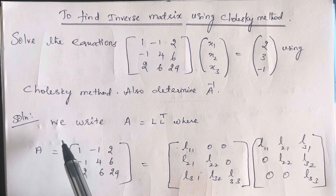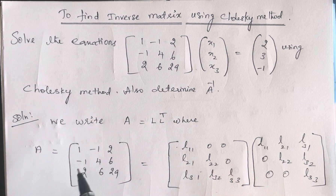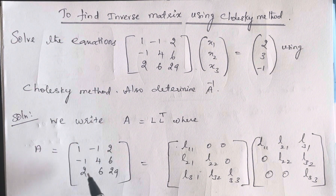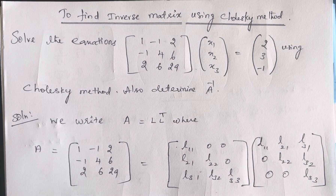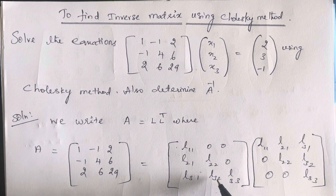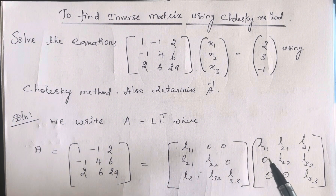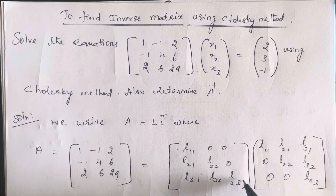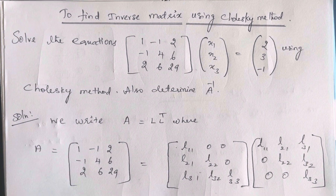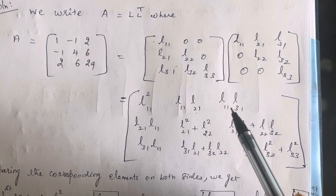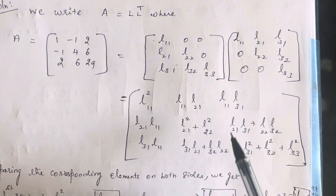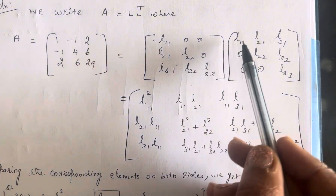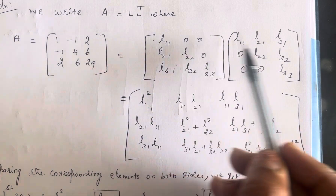Let us go for the solution. We write A = L · L^T. A is the given matrix [[1, -1, 2], [-1, 4, 6], [2, 6, 29]]. L is a lower triangular matrix with elements L11, 0, 0 / L21, L22, 0 / L31, L32, L33. The transpose puts rows into columns. By multiplying L into L^T, we arrive at the product matrix — this is ordinary matrix multiplication, first row with each column.